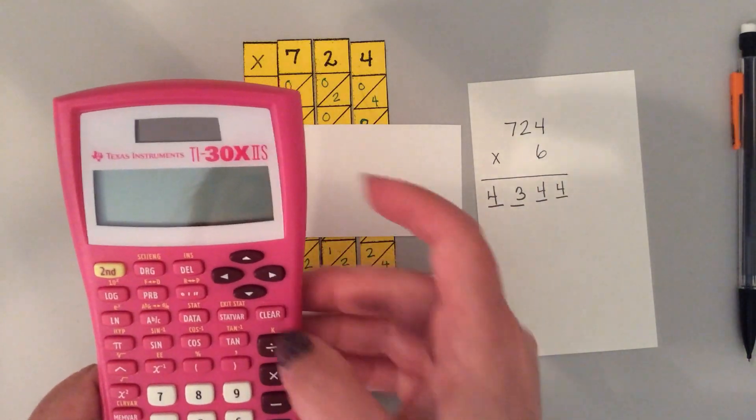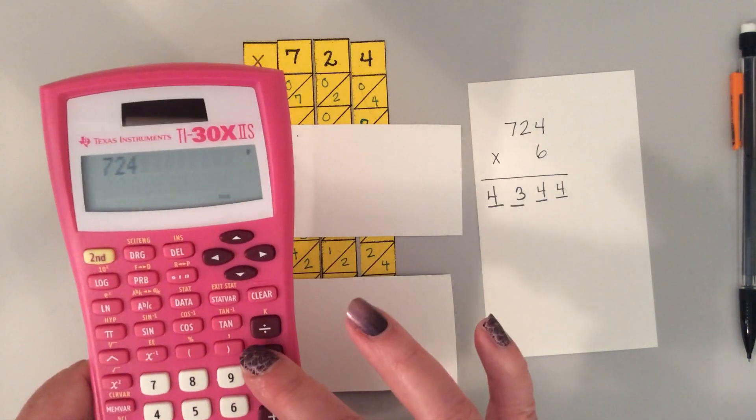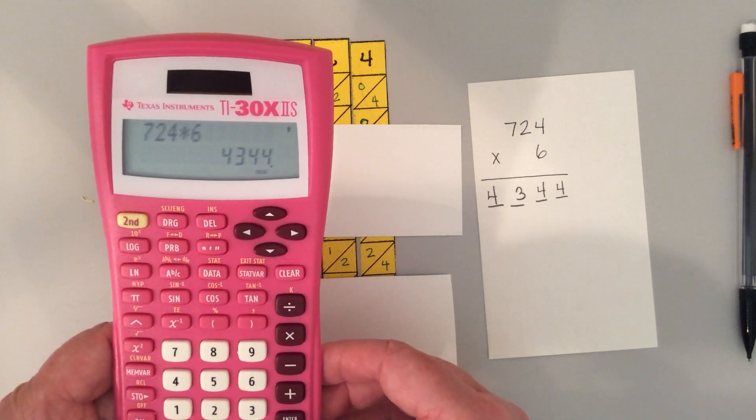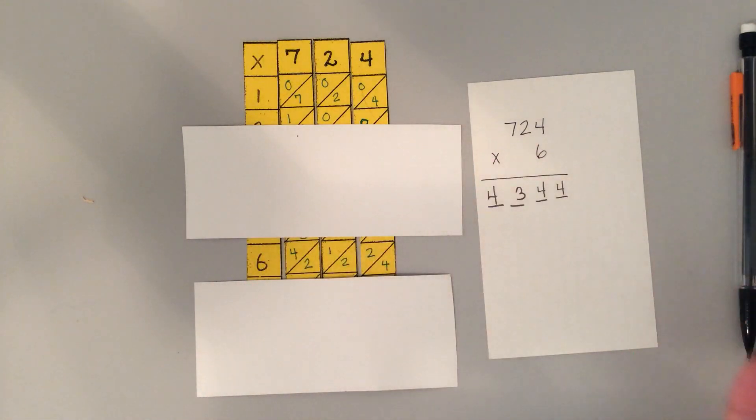Here's a calculator. If I say 724 times 6, and that equals 4,344.